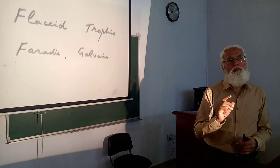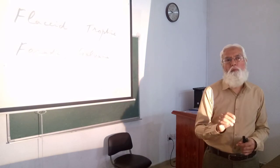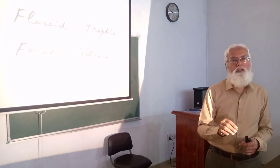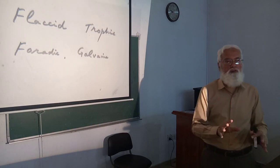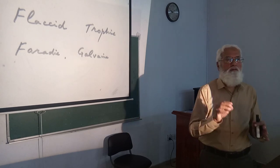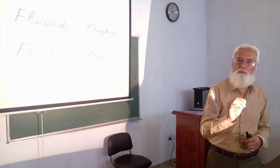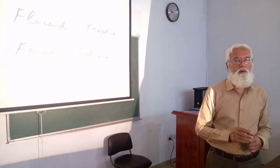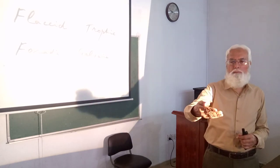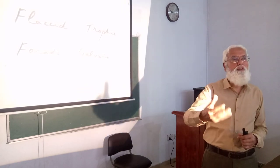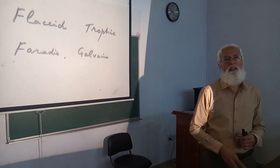Features due to lesion of the corticospinal tract: the first feature is loss of voluntary fine-skilled movements, especially of the distal parts of the limbs — such as the hands and feet.